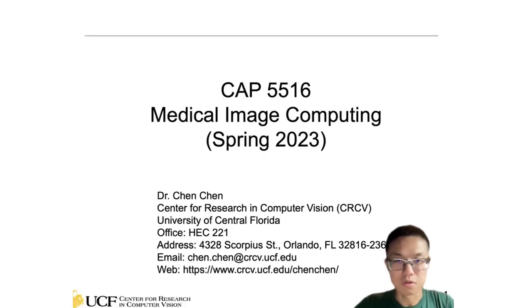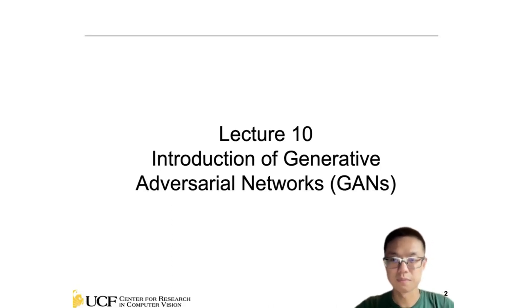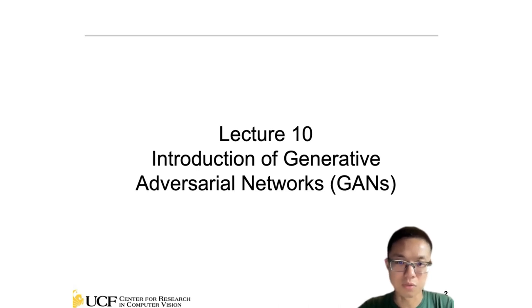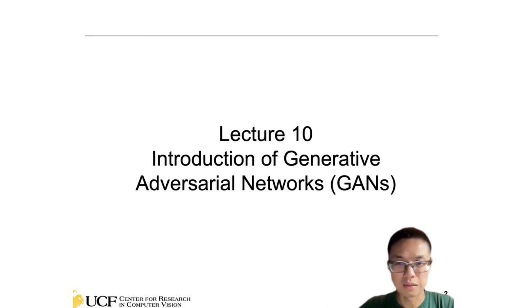For today's class we will talk about generative adversarial networks — GANs. This has been very popular in terms of generative models. Right now the large language model is very popular across many domains; ChatGPT is a type of generative model able to generate text responses. In the computer vision domain, generative models are also popular for text-to-image, image-to-image, and image-to-video generation. GANs have also been used a lot in the medical domain.